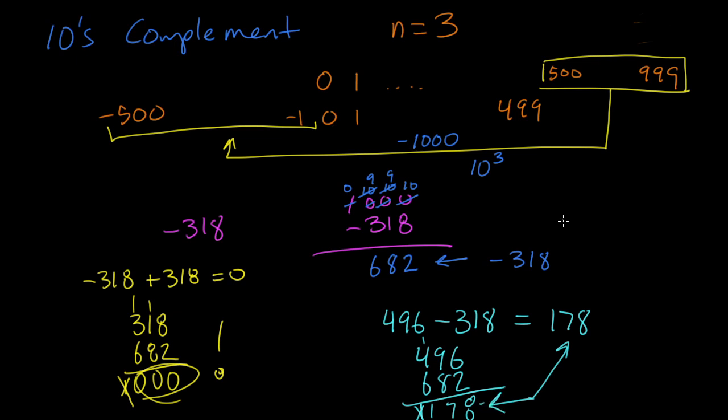I think we're fairly confident now that we can find the tens complement of a base 10 number by subtracting that number from 10 to the nth, where n is the number of digits in the original number. So if we've got a 5-digit number, we're going to subtract it from 10 to the 5th, or 100,000.